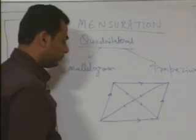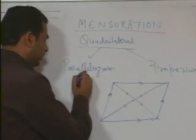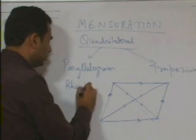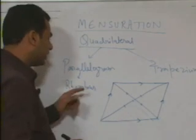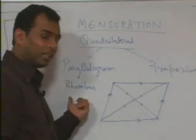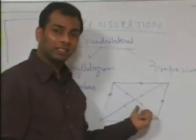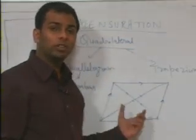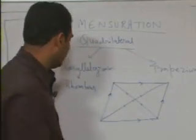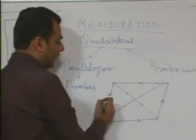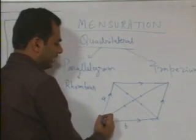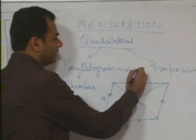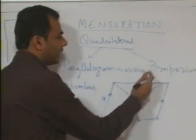A parallelogram can be further divided. One subtype is the rhombus. The basic difference is that a rhombus is a parallelogram in which all four sides are equal in length. For a general parallelogram with sides A and B and included angle theta, the area is A times B times sin theta.